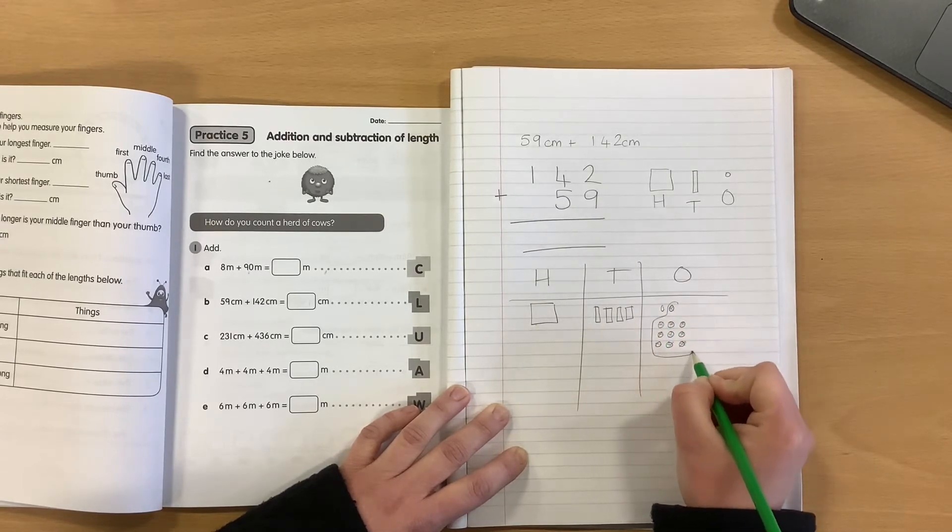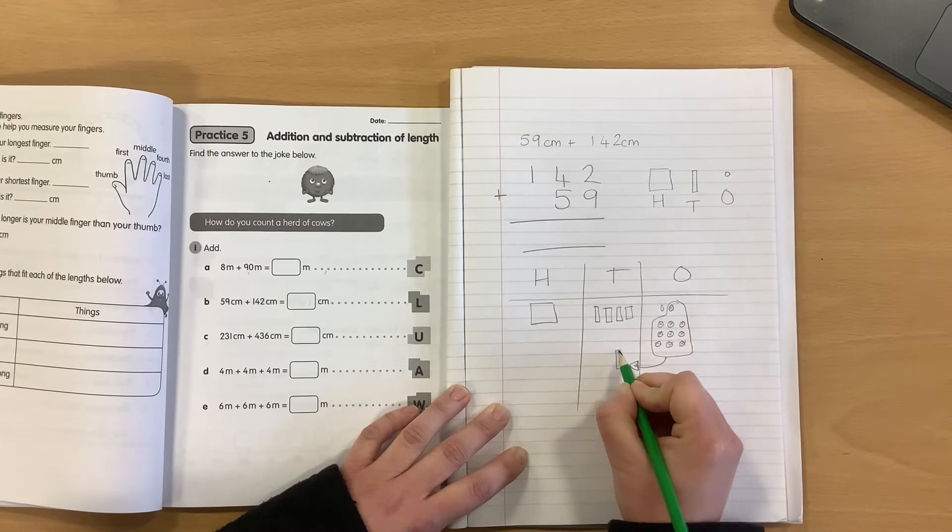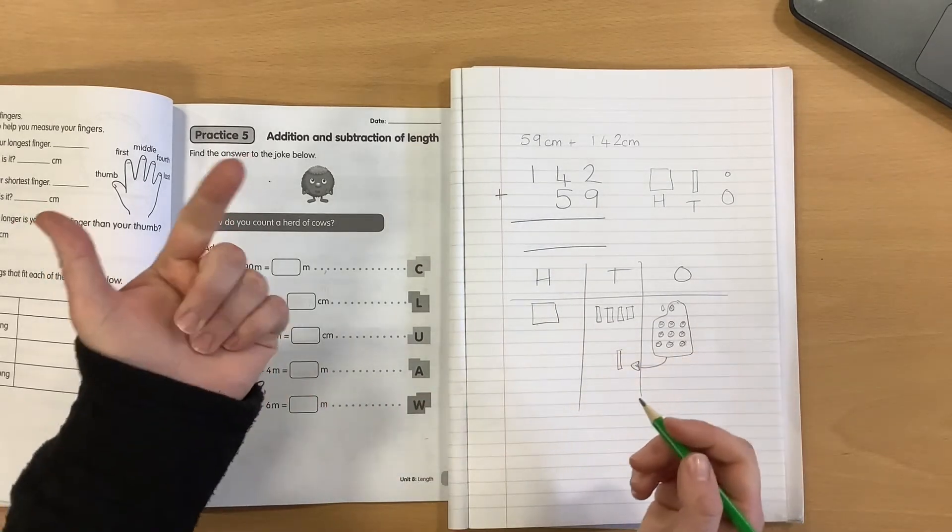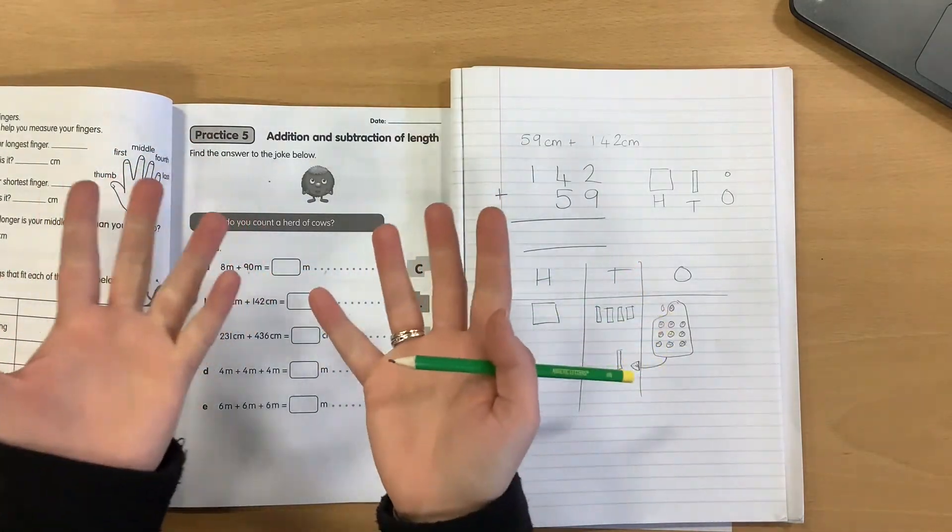I am able to regroup my ten ones into one ten. Because one, two, three, four, five, six, seven, eight, nine, ten. Ten ones is one ten.